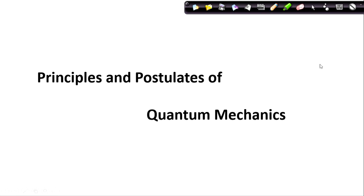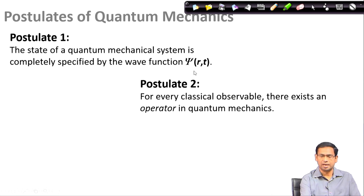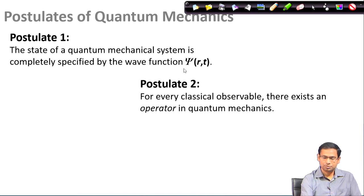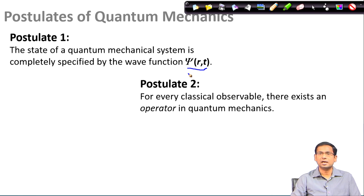The two postulates that we have discussed so far kind of set the ground for our future discussion. For example, postulate 1 promised us that if we want to treat any system quantum mechanically, the quantity we must always be looking for is the so-called state function or the wave function, which we denote by psi. This state function completely specifies the state of the system — everything we can possibly know about the system is in this state function psi, but the wave function itself does not have any physical meaning.